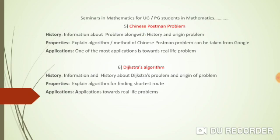The next topic is the Chinese Postman Problem, an application of graph theory. You can cover its history, origin, and algorithm. The Chinese Postman Problem models a postman leaving the post office and delivering postcards to every house with minimum distance and minimum time — determining which route allows delivery to every house in the shortest stipulated time.